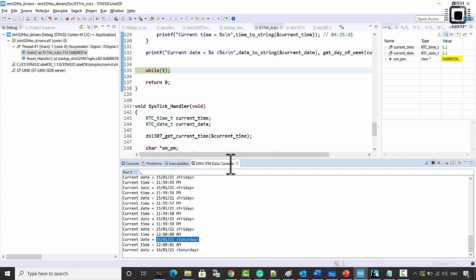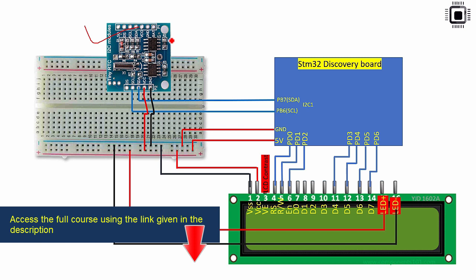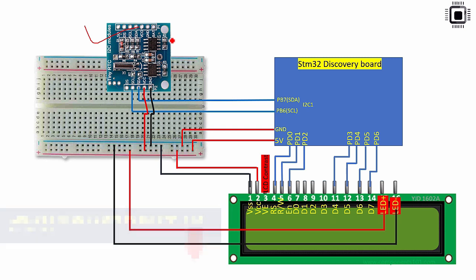If something is not working, like difficulties communicating with the RTC chip, use a logic analyzer to probe the I2C transactions — check whether the RTC chip is responding and whether the address information is correct. Verify using the trace from the logic analyzer — that's the best way to debug. We have completed communicating with the RTC chip. Next we'll install the LCD so instead of printing date and time over the SWV data console, we can display it on the LCD. That will be covered in the next lecture.